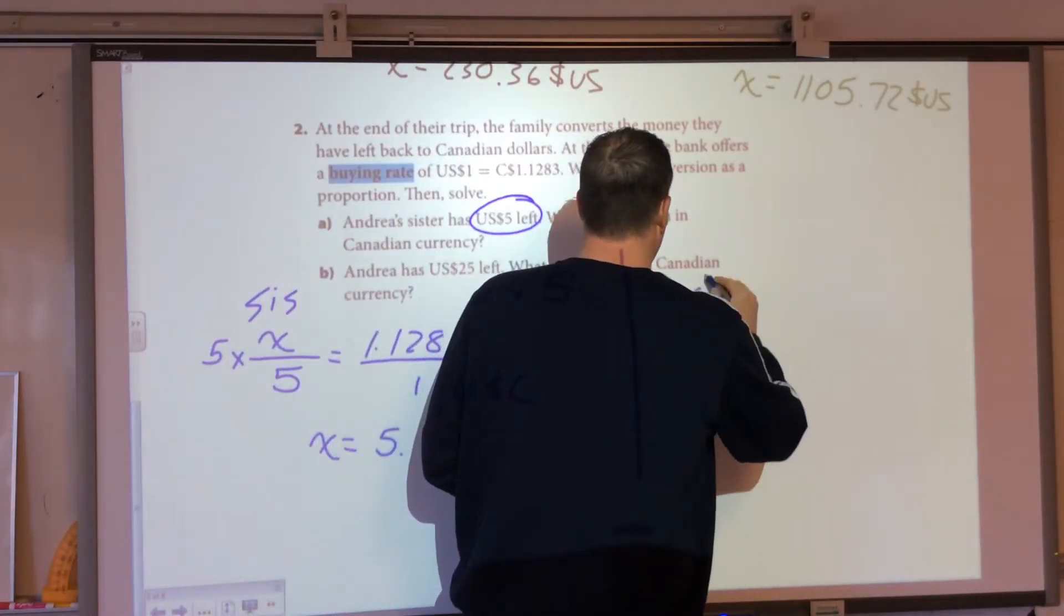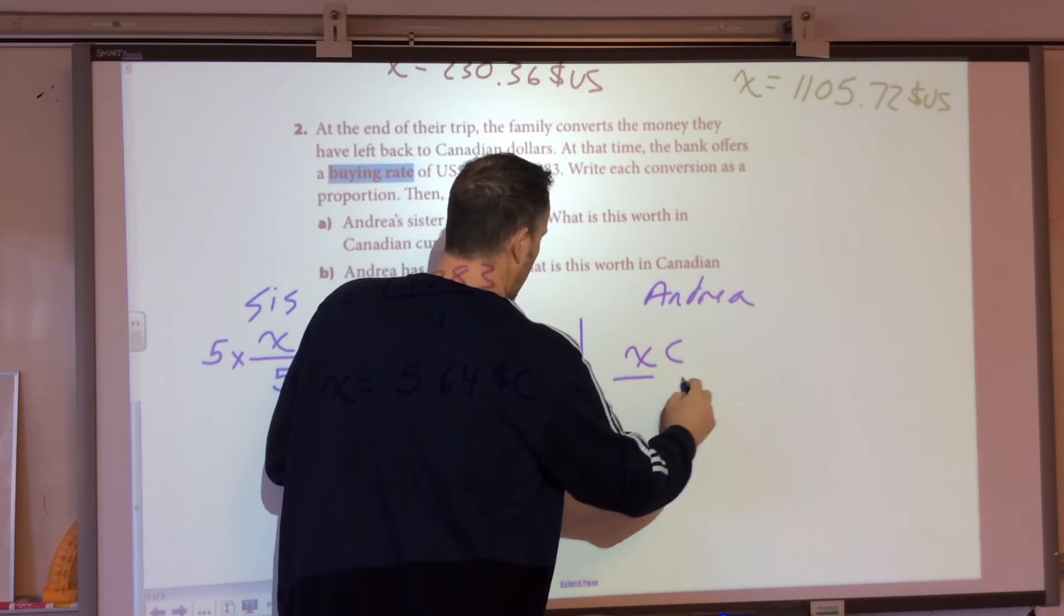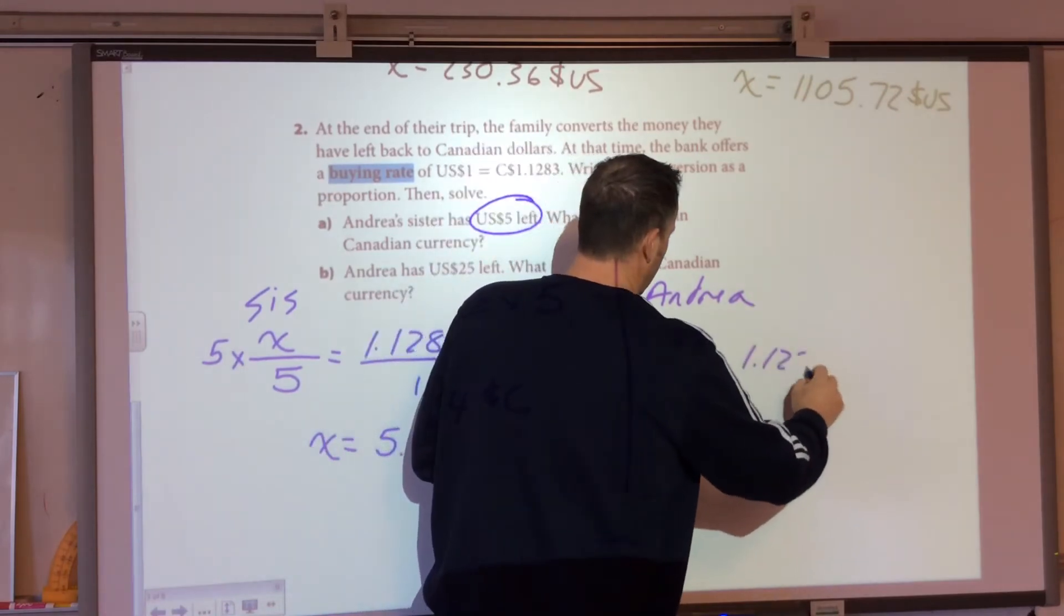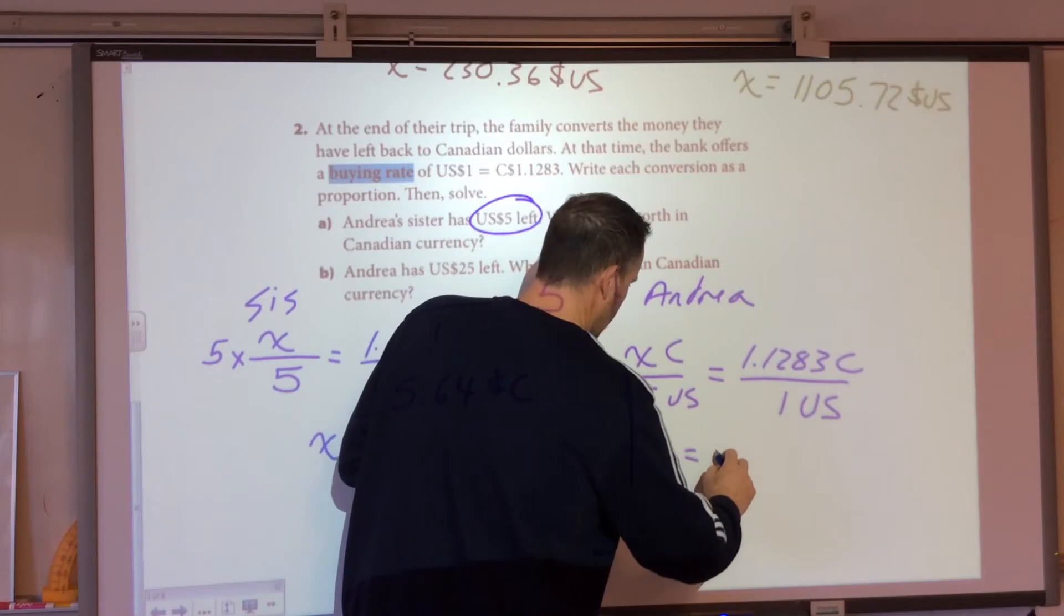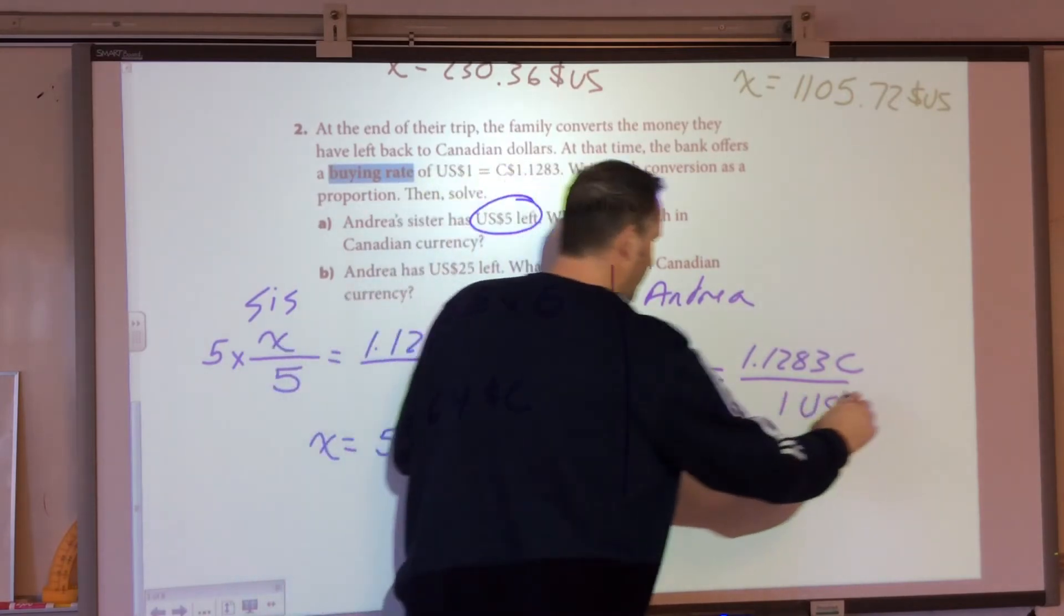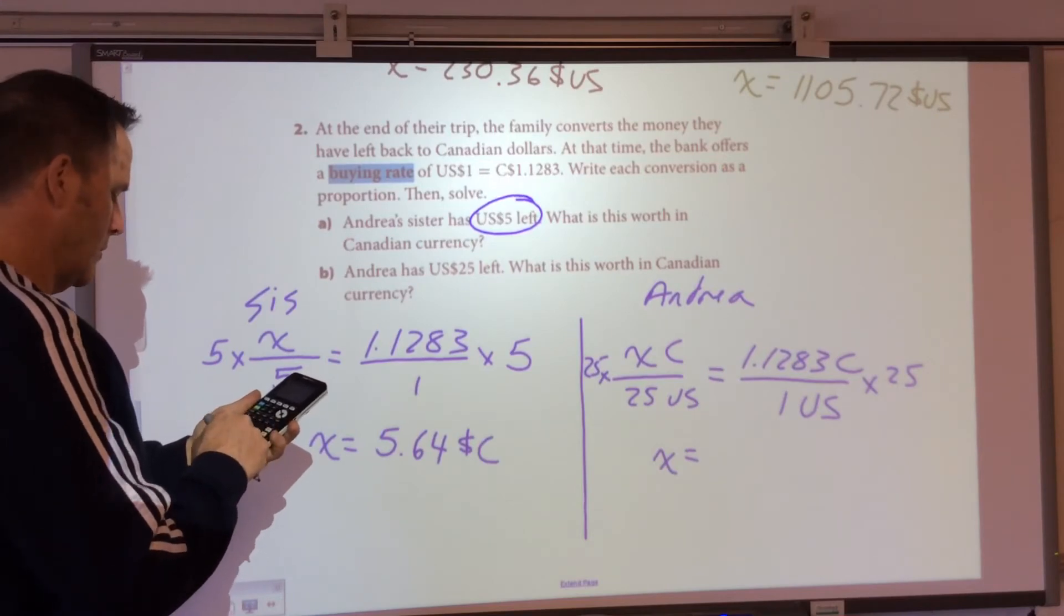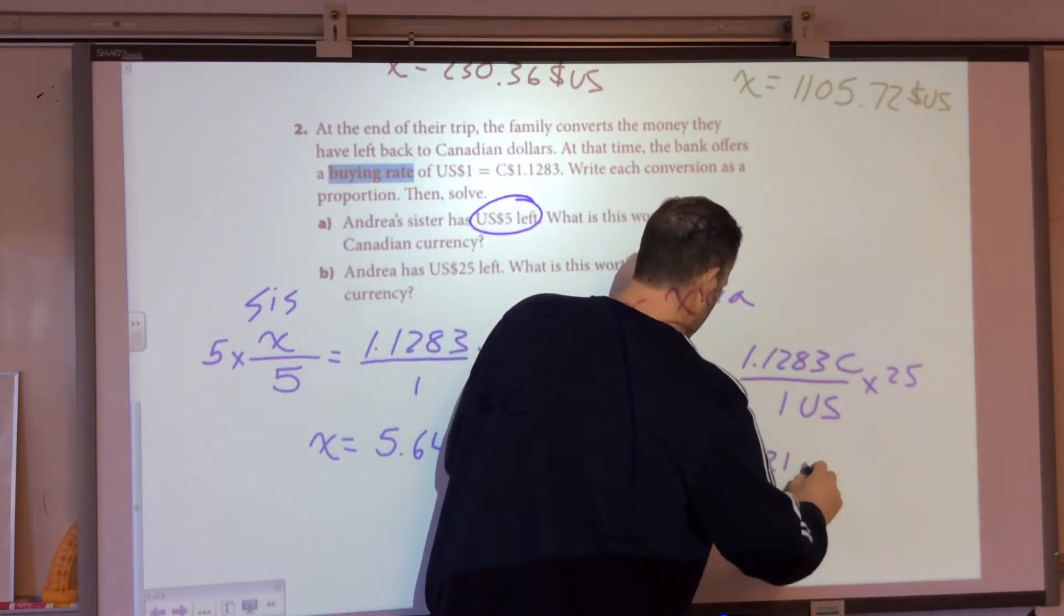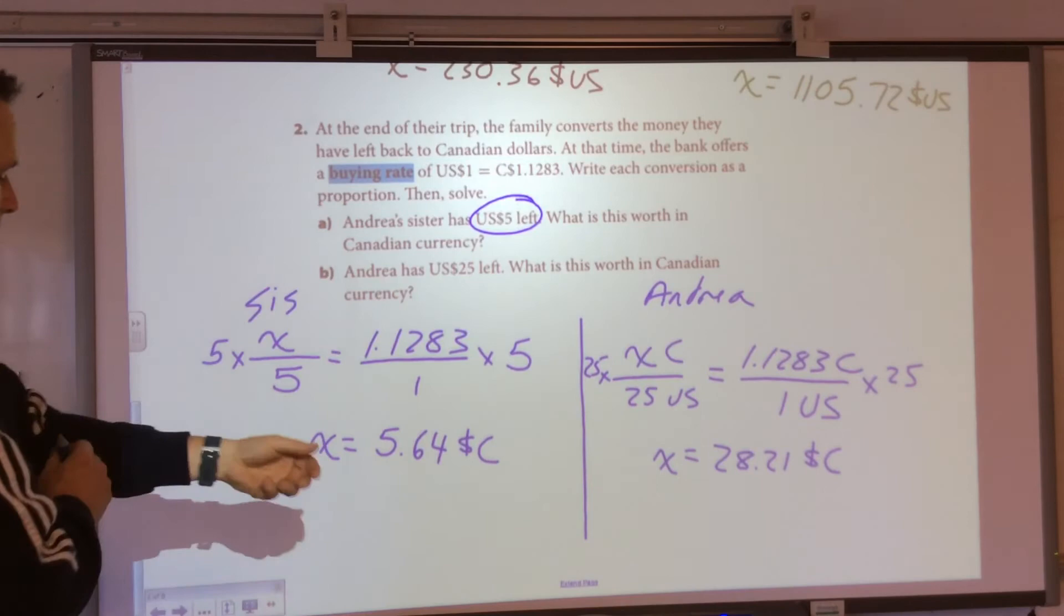Then Andrea. Same deal. She has $25 left. And she wants it in Canadian over 25 US. And that's equal to 1.1283 Canadian over 1 US. So, X equals, multiply both sides by 25. 25 times 1.1283 equals $28.21 Canadian. So it's important to see how much it changes. This is nice and easy for us.